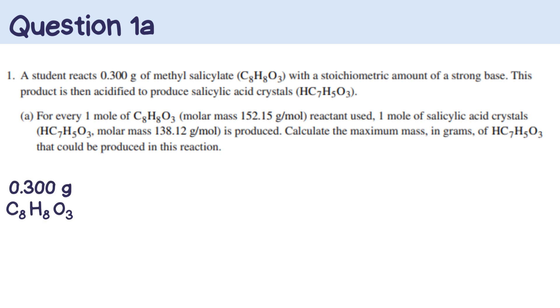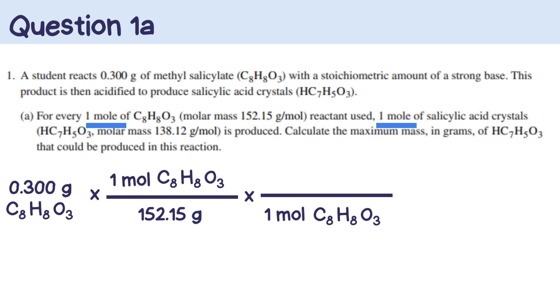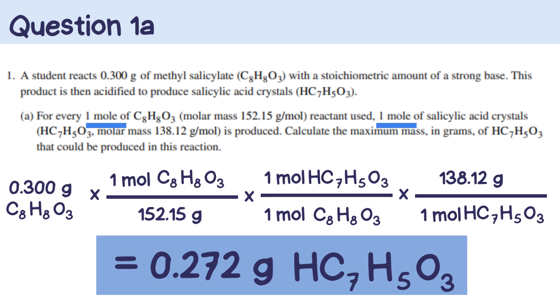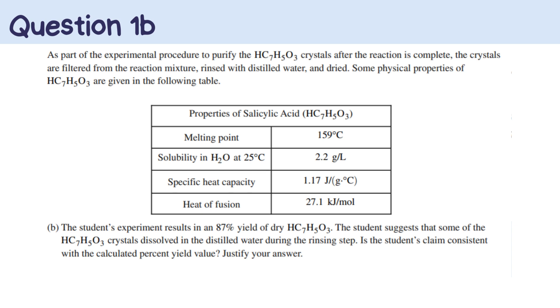So you just want to use some stoichiometry. Starting off with the 0.3 grams of methyl salicylate given. Then place the 152.15 grams per 1 mol on the bottom, and the 1 mol of the salicylate on top. Then for every 1 mol of salicylate, it's going to be 1 mol of the salicylic acid. And I know this because in the problem it says that 1 mol of salicylate reacts with the 1 mol of the salicylic acid. That's definitely a tongue twister. So I'm going to place the 1 mol of the salicylic acid on top. And then after that for every 1 mol of the salicylic acid, it has 138.12 grams. And that's actually what you're trying to find. So plug that in your calculator and you get 0.272 grams. Okay, so that was pretty simple for question 1a.